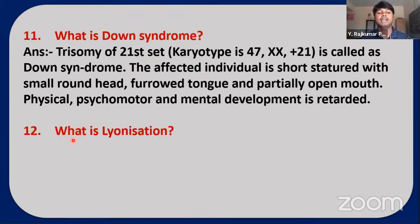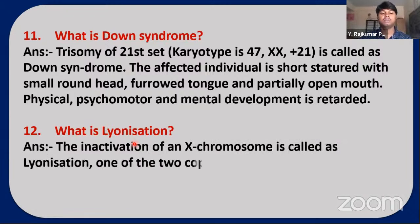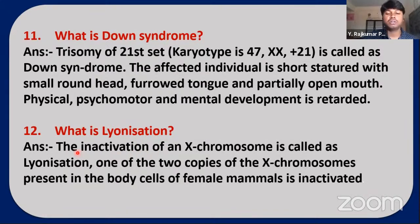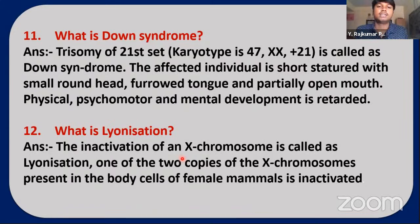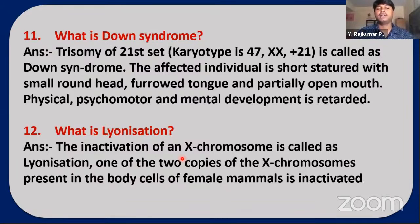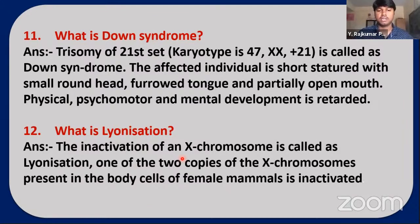Next question: What is lionization? Lionization is the inactivation of an X chromosome. One of the two copies of the X chromosomes present in the body cells of female mammals undergoes heterochromatinization or inactivation. The process is known as lionization and the condition is called heterochromatinization.